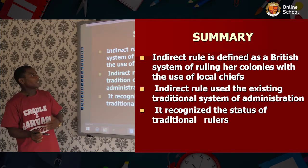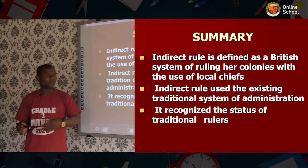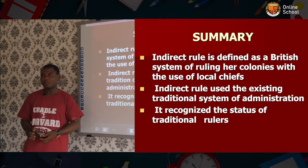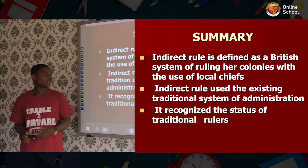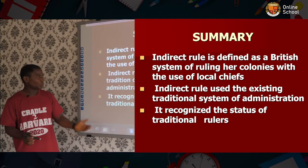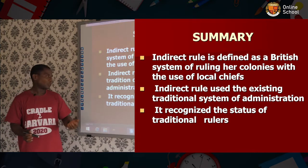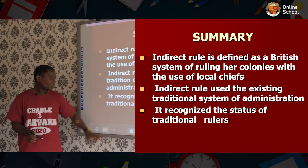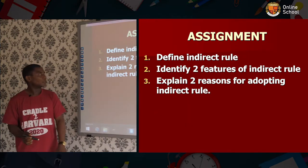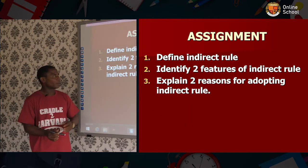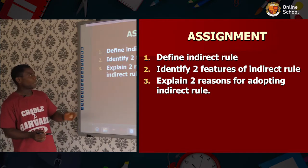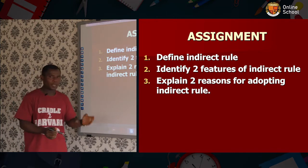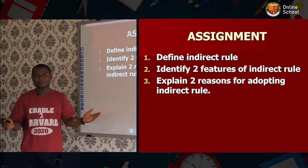Summary: Indirect rule is defined as a British system of ruling her colony with the use of local chiefs. Indirect rule used the existing traditional system of administration. It recognized the status of traditional rulers. Assignment: define indirect rule, identify two features of indirect rule, and explain two reasons for adopting indirect rule. Thank you very much.